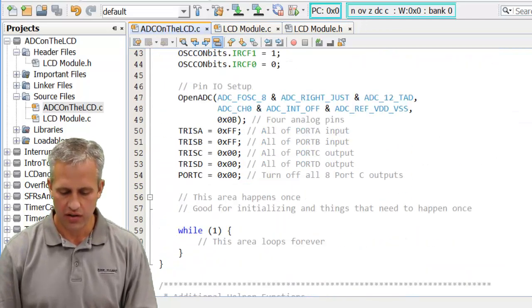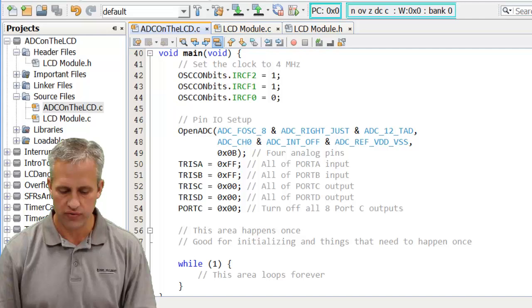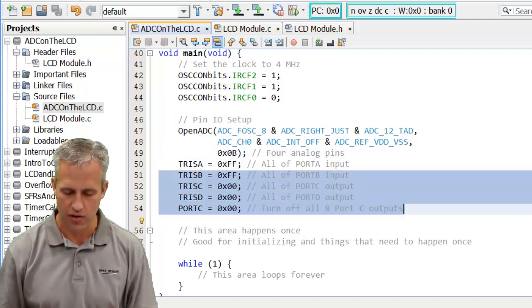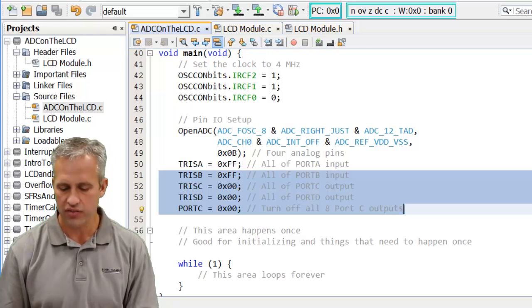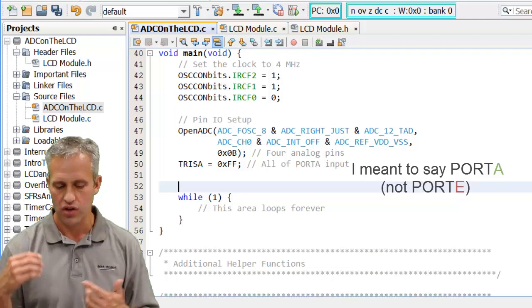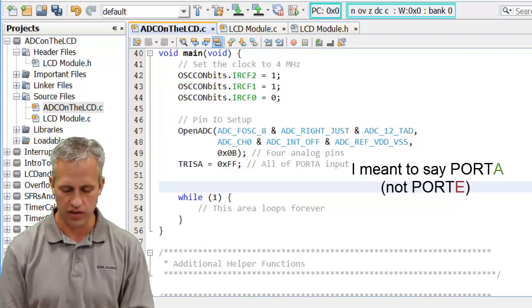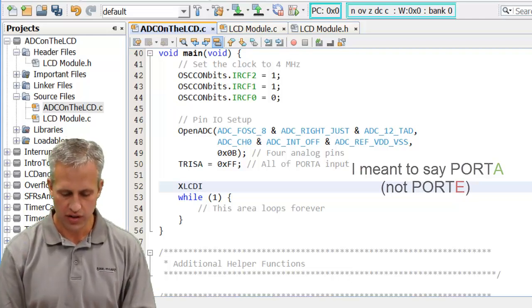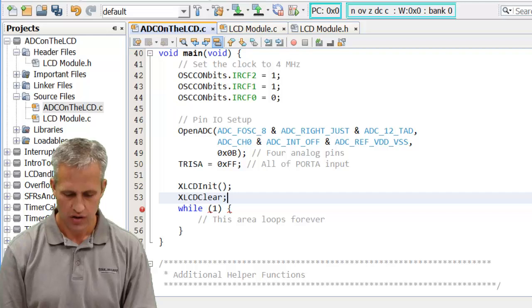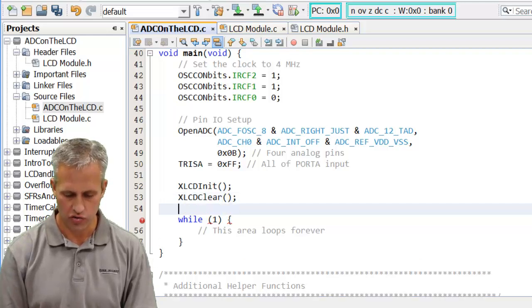Coming down here in main, you can see that we've already set up for four analog pins. I'm just going to leave that for now. Then these other things I'm just going to blow away because I know the only thing I'm going to use is port E and the LCD. Speaking of the LCD, we better do an init and a clear. I just type part of the word and then I hit control space.